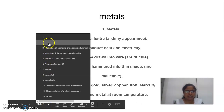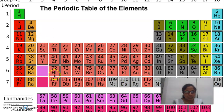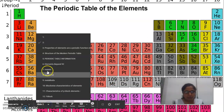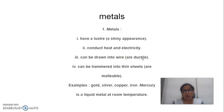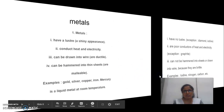We will see the metals in this periodic table. These are platinum, mercury, gold, copper, nickel, rhodium, palladium, silver, cadmium — these are the metals. These metals show the properties mentioned — they have lustre and shiny appearance. Gold, silver, copper, and iron all have shiny appearance.